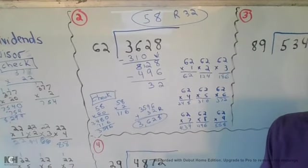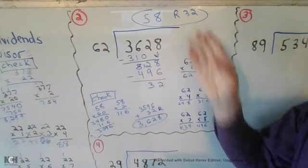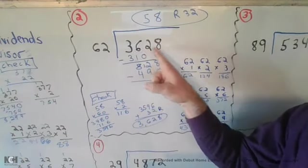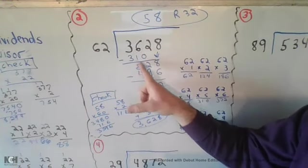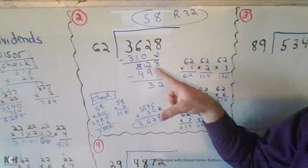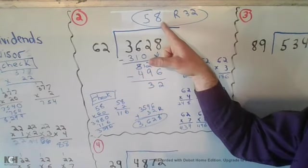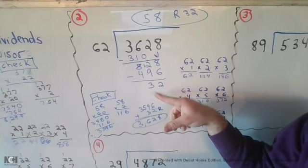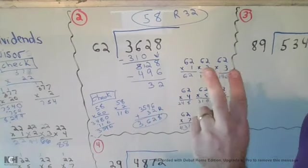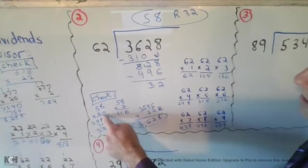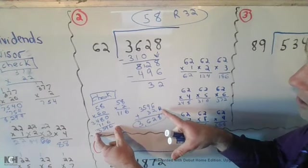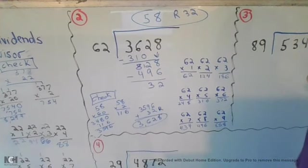Here we are with number two. 58 remainder 32 was your answer for this one. You figured out that 62 goes into 362 five times, you get 310, subtract to get 52. Bring down your 8 to have 528. 62 goes into 528 eight times to get 496, subtract to get 32 as your remainder. To check it, I did 58 times 62 using my second strategy. I did 58 times 60 and 58 times 2, ended up getting 3596, added my remainder of 32 to get 3628.